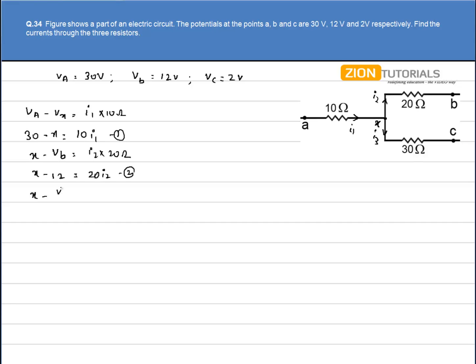The third equation is X minus potential at C equals I3 times 30 ohms. So, X minus VC, that is 2, equals 30I3. This is my third equation.